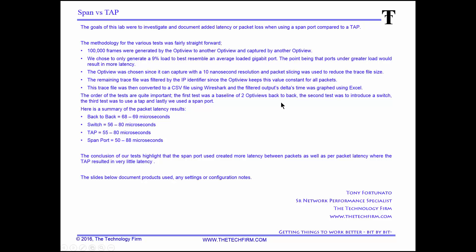To cut to the chase, here's a summary. Back-to-back was 68 to 69 microseconds — about one microsecond of latency, which is just two OptiViews with a piece of copper between them. The switch came in at 56 to 80 microseconds, which was an eye-opener showing how much difference a switch adds. We then introduced a tap, which wasn't all that different from the switch. The key conclusion is that the span port created more latency — not just between packets, but per packet.